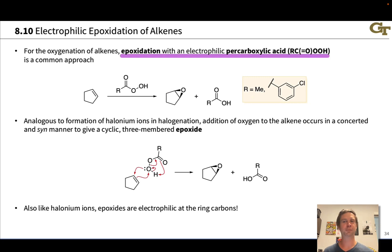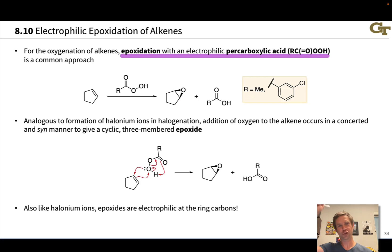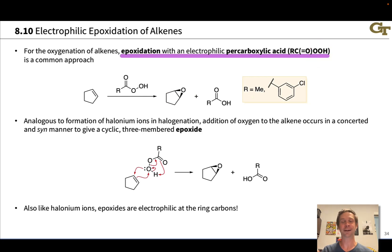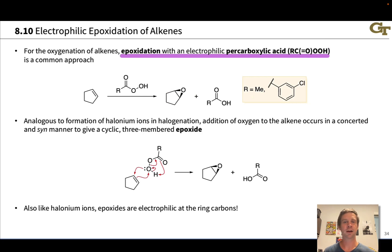Percarboxylic acids are a little bit trippy in structure, so they're worth discussing briefly. A percarboxylic acid is like a carboxylic acid, which contains a carbonyl group — C double bond O — linked to an OH group, but with an extra oxygen jammed between the carbonyl carbon and the hydroxyl group. So instead of having an OH, they have an OOH, and that extra oxygen is the one transferred to the alkene in epoxidation reactions.